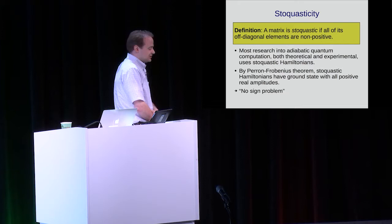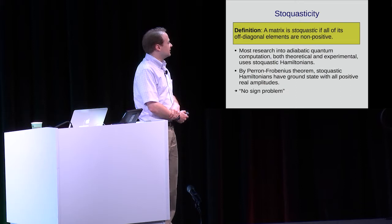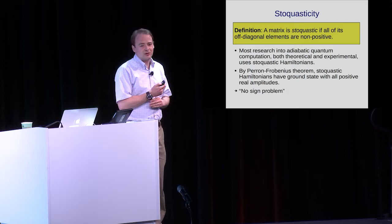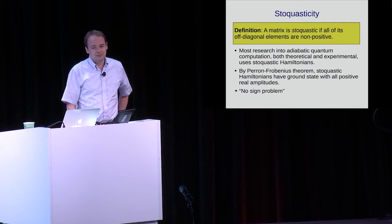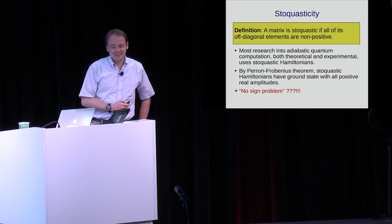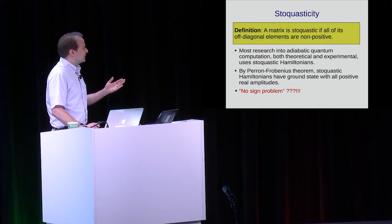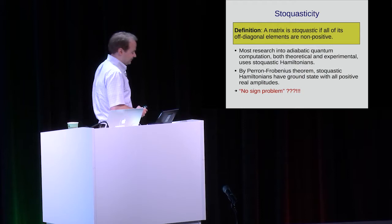A practitioner of quantum Monte Carlo simulations might tell you that we should have no problem simulating these Hamiltonians because there's no sign problem. So if you're interested in using adiabatic quantum computers to solve problems you can't solve classically, you should take this statement very seriously. Is it true that classical algorithms can always simulate stoquastic adiabatic computations? If so, that detracts from the motivation for building stoquastic adiabatic hardware.